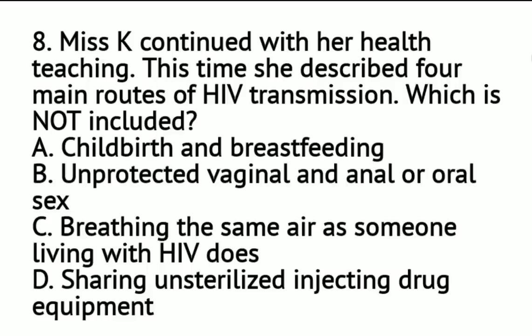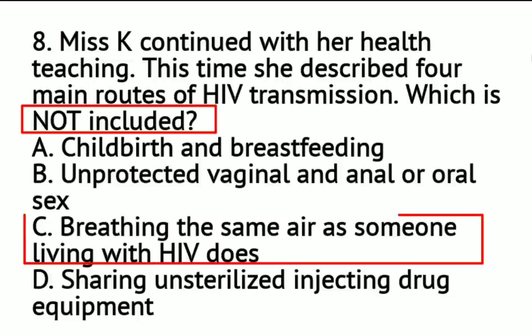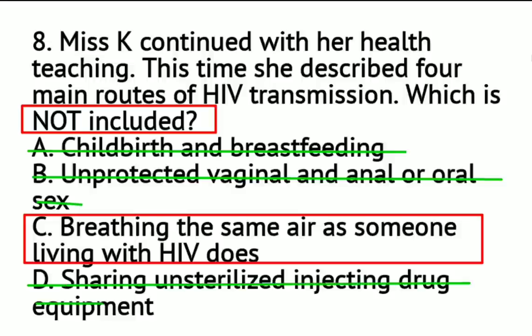Question number 8: Ms. K described the 4 main routes of HIV transmission — which is NOT included? A. Childbirth and breastfeeding, B. Unprotected vaginal, anal or oral sex, C. Breathing the same air as someone living with HIV, or D. Sharing unsterilized injecting drug equipment. The correct answer is letter C — breathing the same air. HIV is not transmitted via airborne or waterborne routes. The major route of transmission is sexual intercourse, via the placenta during pregnancy, and via breast milk in the postnatal period.